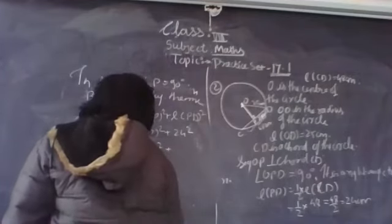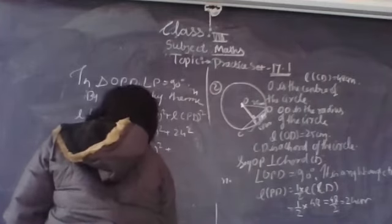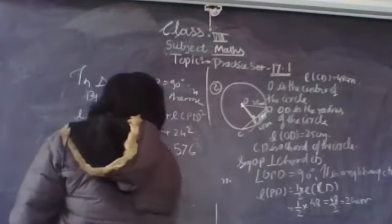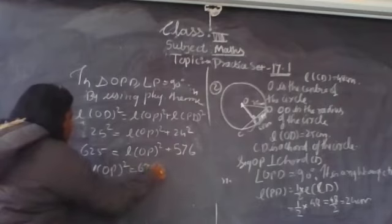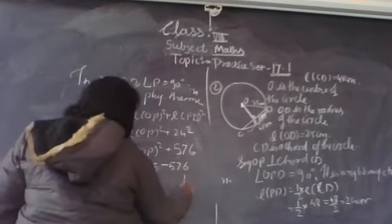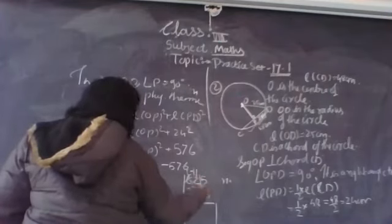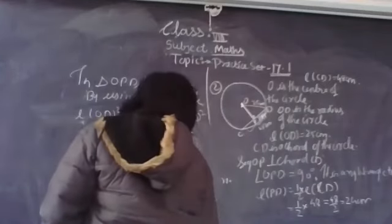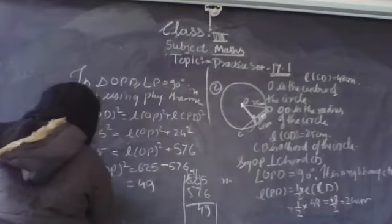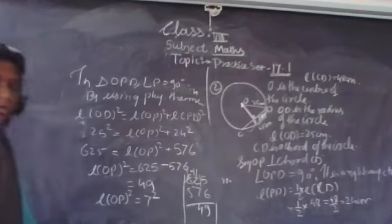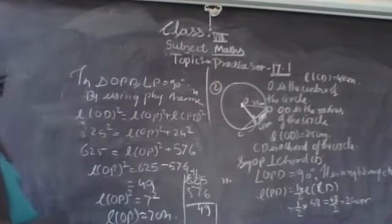So OP squared is equal to 625 minus 576. We subtract: 625 minus 576 equals 49. That means OP squared equals 49, and OP is the perfect square root of 49. So OP is equal to 7cm.